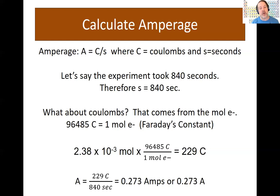So take that number, multiply it by Faraday's constant, and end up with 229 coulombs. Now taking the coulombs, 229 coulombs, divided by the time, 840 seconds, plug into a calculator, and we can see how many amps, often just written as the symbol A, that were passed in the experiment.